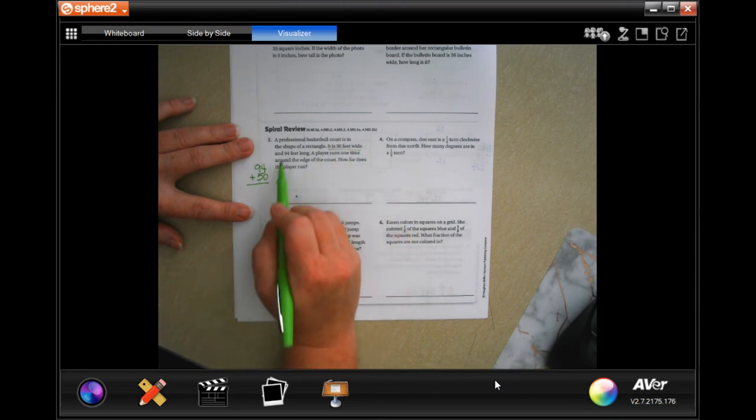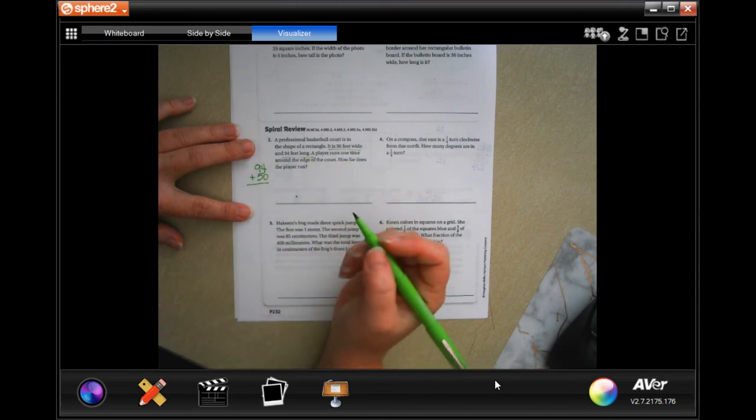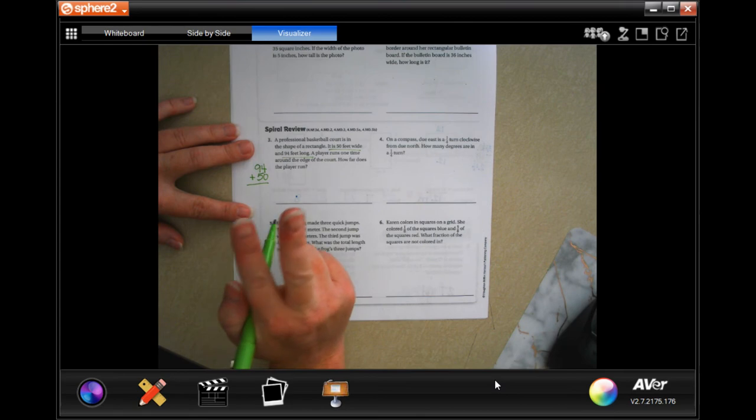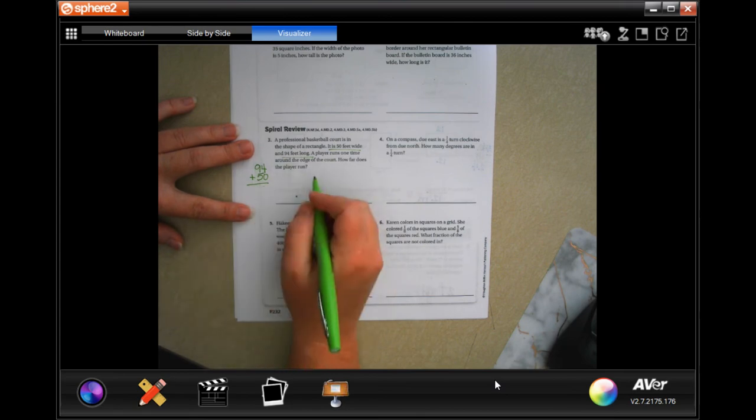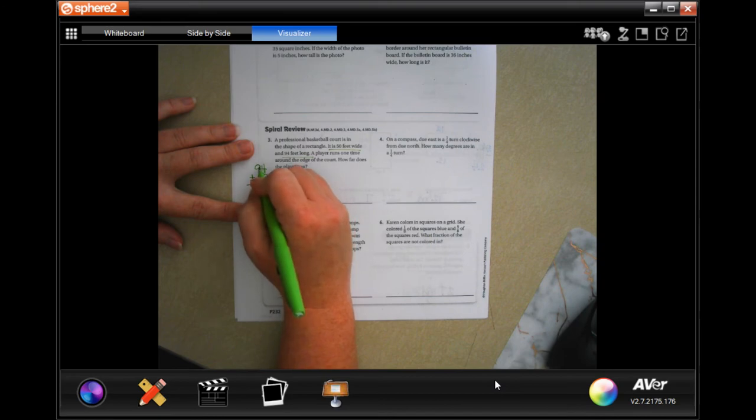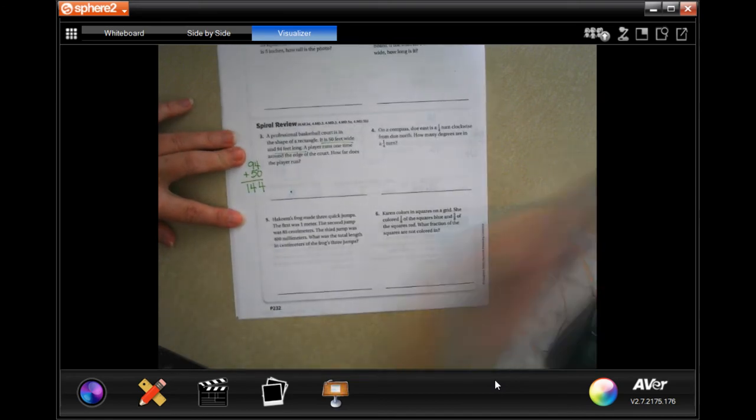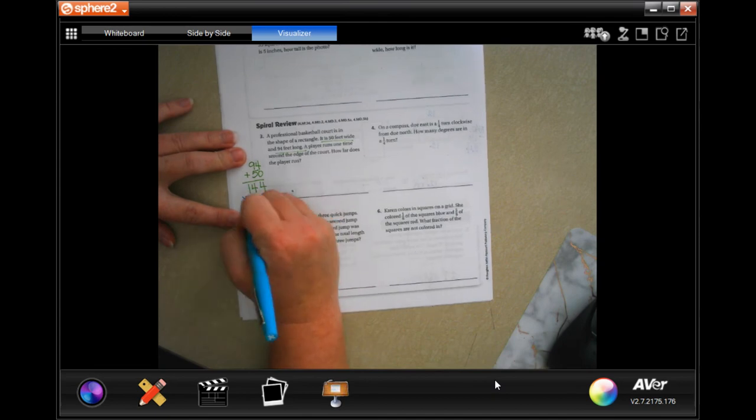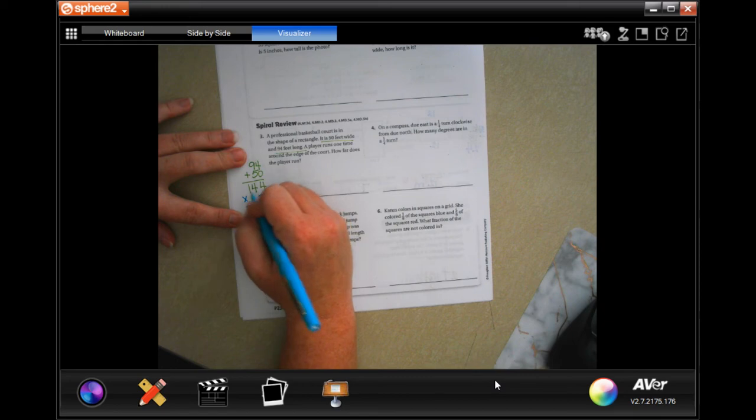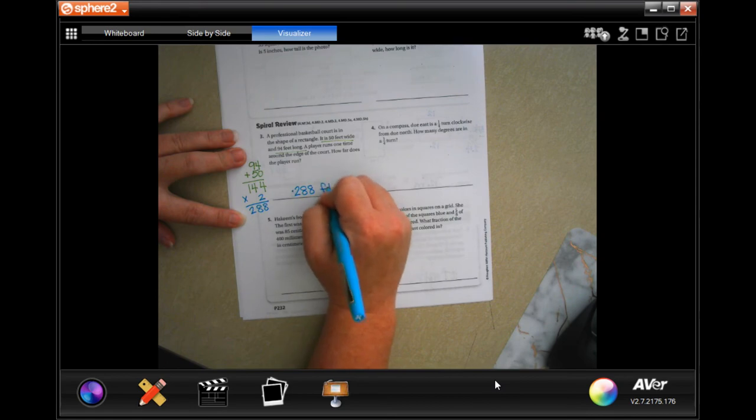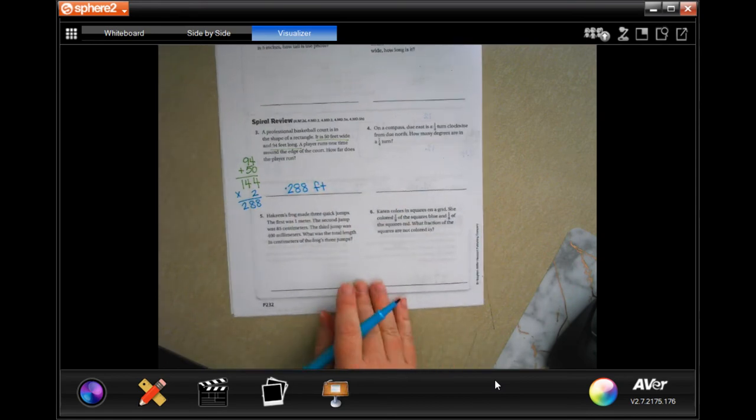So the width is 50. The base is 94. There's two of these to those sides. So I'm just going to add them up and then multiply it by two. Four plus zero is four. Nine plus five is 14. So now I'm just going to do times two. Two times four is eight. Two times four is eight. Again, two times one is two. 288 feet. And that's it.